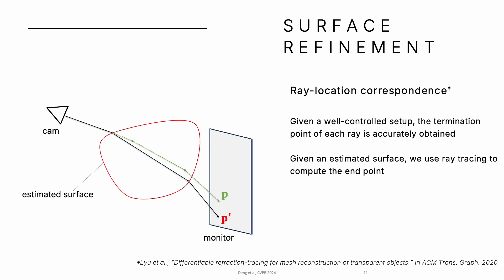Given an estimated surface, we use ray tracing to compute the endpoint. The gap between estimated and ground truth termination points guides the surface refinement.